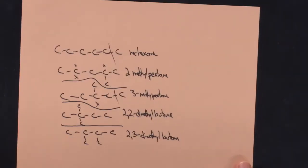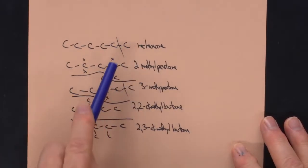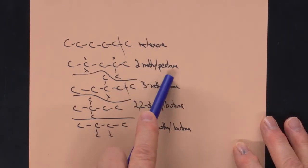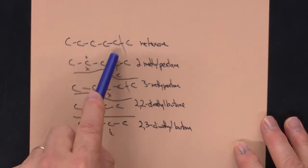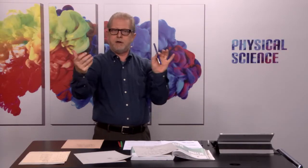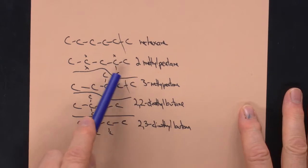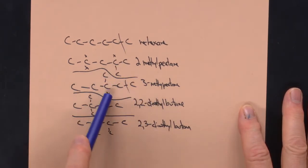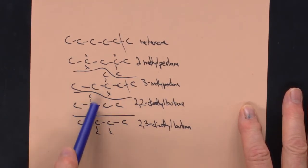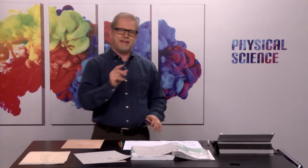For six carbons — hexane isomers — there are more possibilities. Starting with normal hexane, you can move a carbon to get 2-methylpentane, or move it to the middle to get 3-methylpentane, or move two carbons to get 2,2-dimethylbutane or 2,3-dimethylbutane. That gives five structural isomers for C6H14.